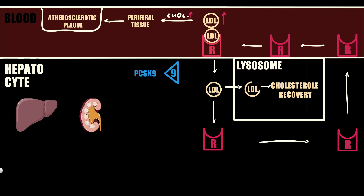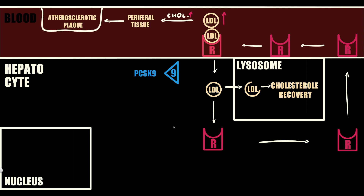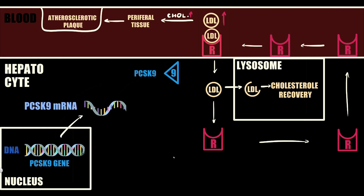First, let's check the synthesis of PCSK9. According to the central dogma in molecular biology, genetic information flows from DNA to RNA and from RNA to protein. In our case, the PCSK9 gene is located on chromosome 1. PCSK9 messenger RNA is formed through transcription and splicing processes, and the PCSK9 protein is the result of translation.